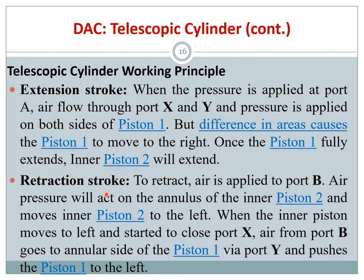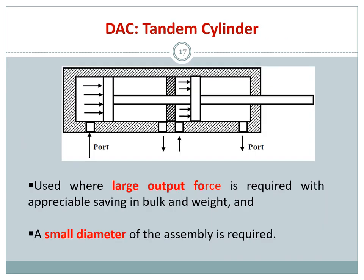The tandem cylinder is similar to a normal double acting cylinder but has a wall in the middle, creating two chambers — room one and room two. It has two pistons connected by a rod, with two ports: one to enter and one to exit per chamber.